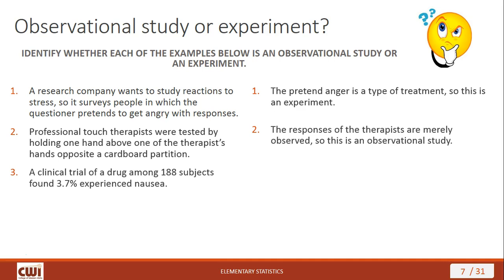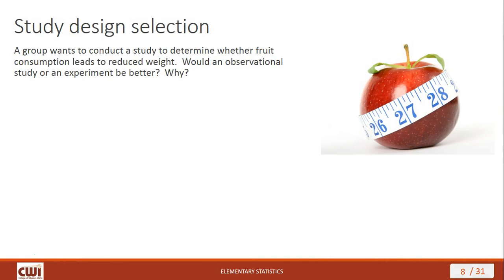Next example: a clinical trial of a drug among 188 subjects found 3.7% experienced nausea. This is an experiment, because a clinical trial involves giving some type of treatment — and presumably there are people who don't get the treatment — so you're comparing the results from the two groups. That's what makes this an experiment.